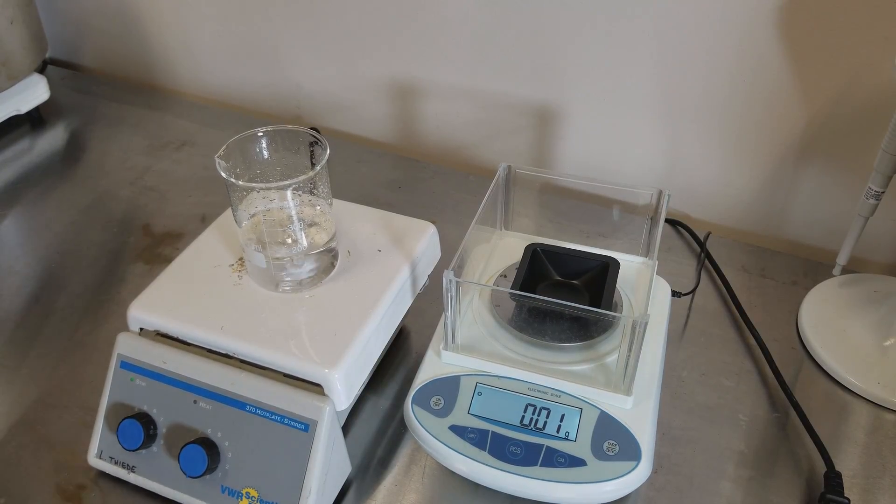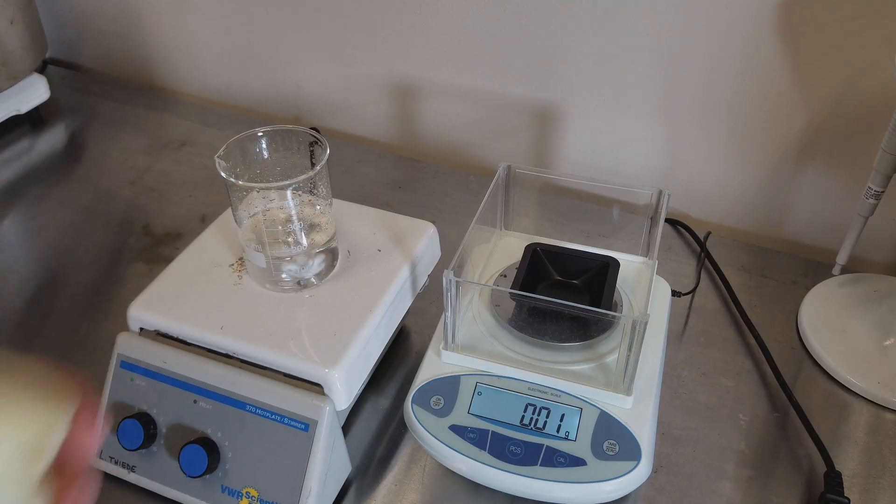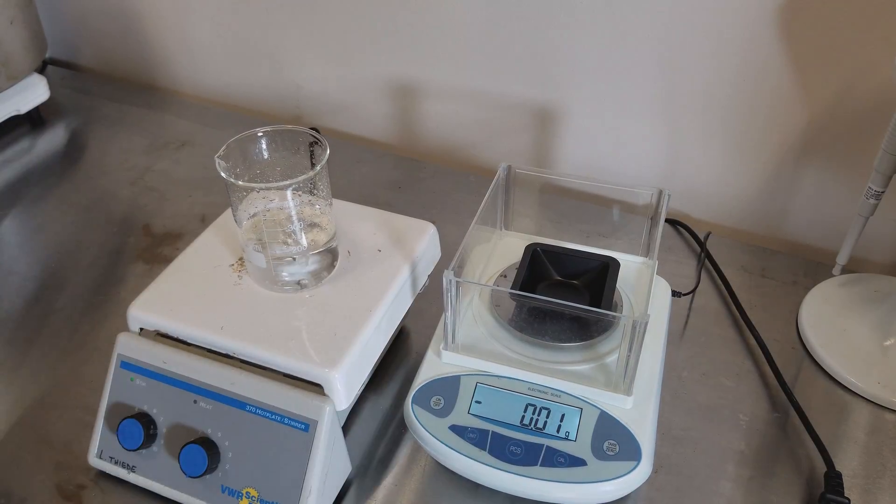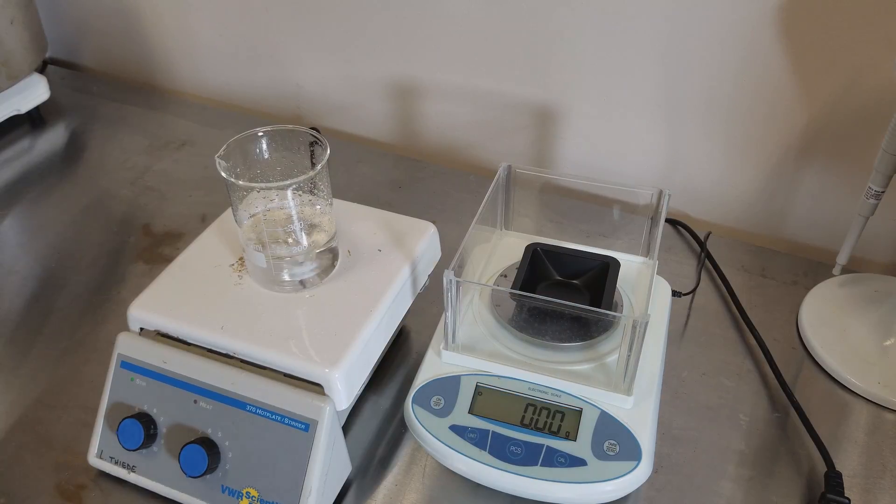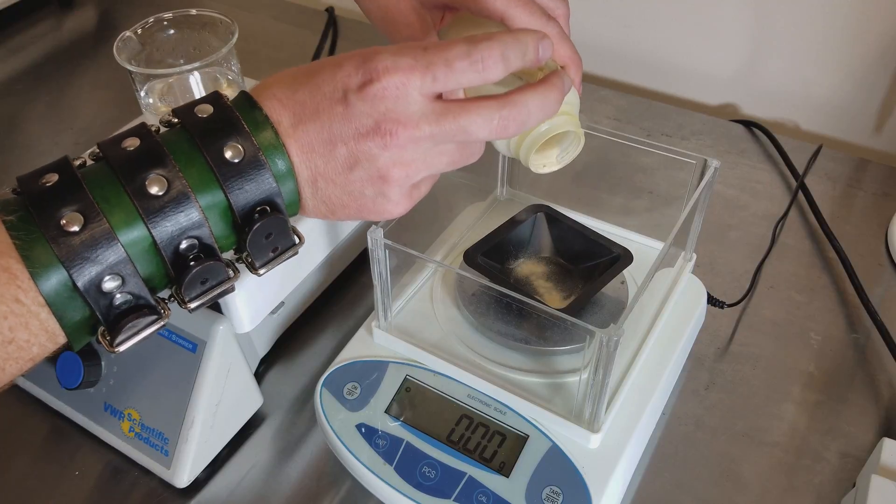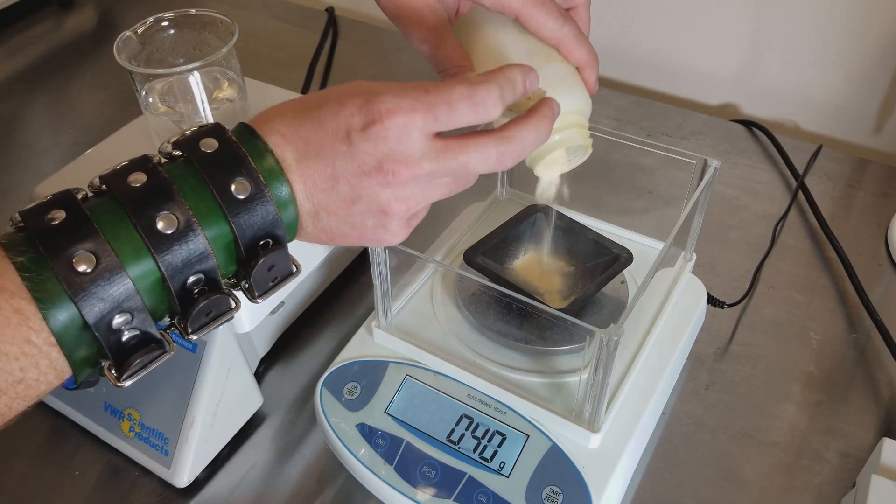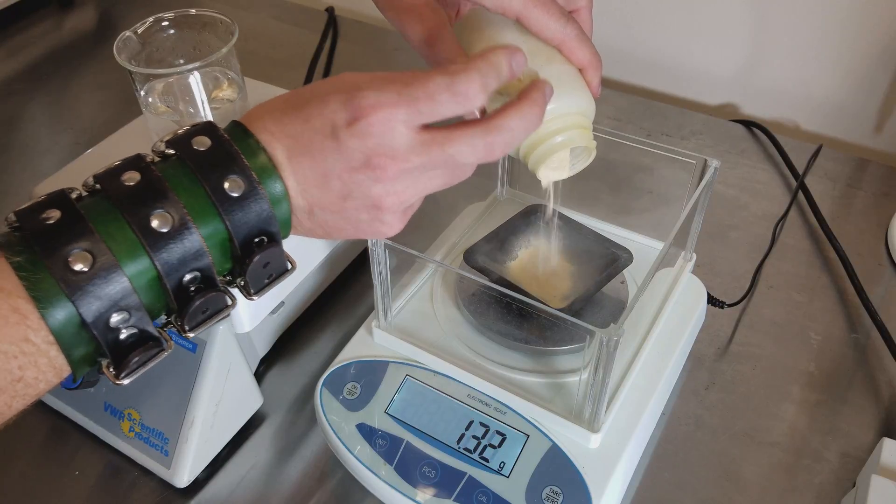The first thing we're going to do is 2.5 grams of tryptone. What I always do is I just slowly tap out 2.5 grams.